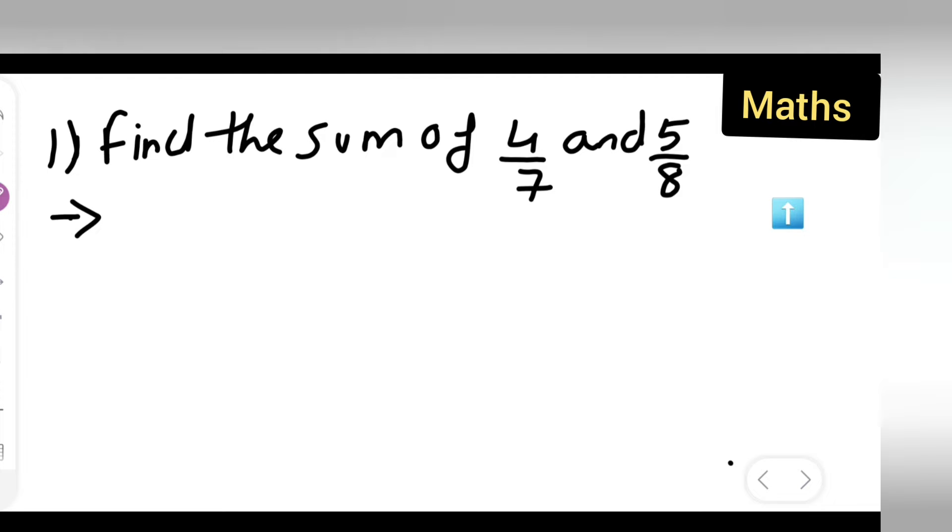So first y'all write down here, 4 upon 7 is equal to, how y'all have to write this? 4 upon 7, take 4 upon 7, multiply it with the denominator of other. Both numerator and denominator y'all have to multiply with this one. Cross multiply it is like, okay?